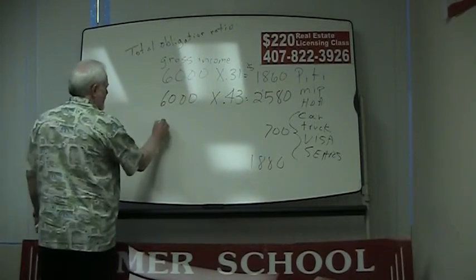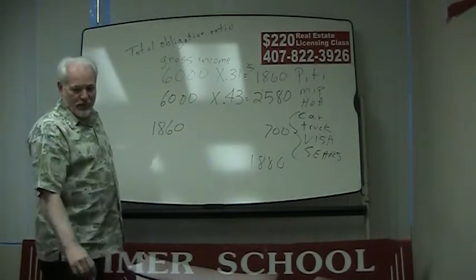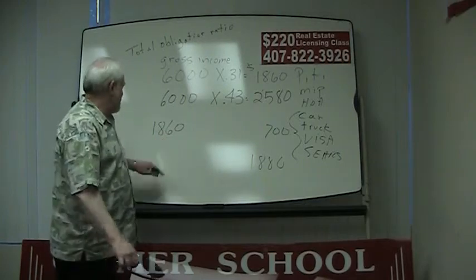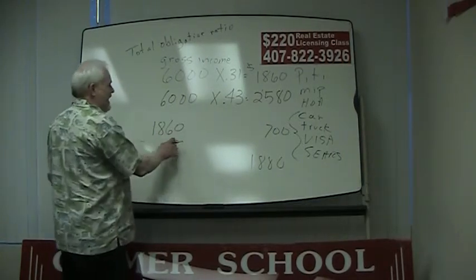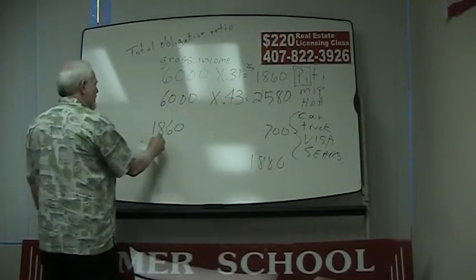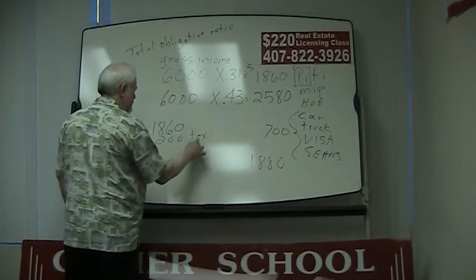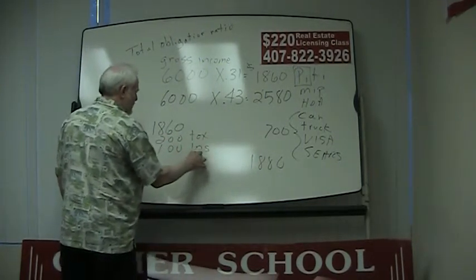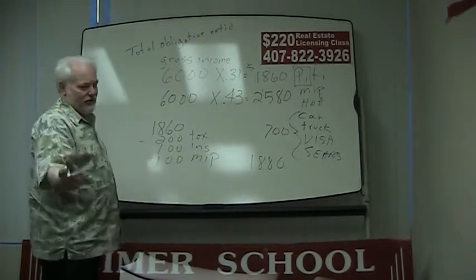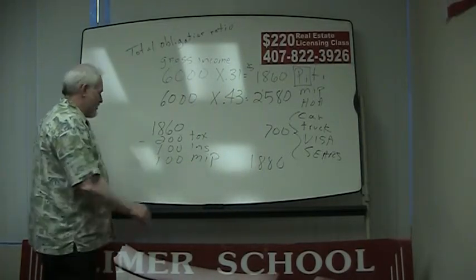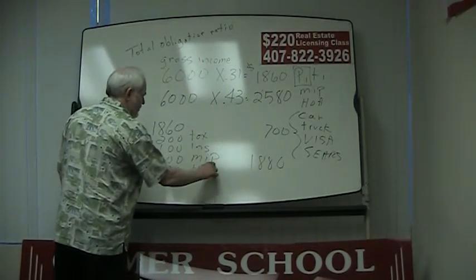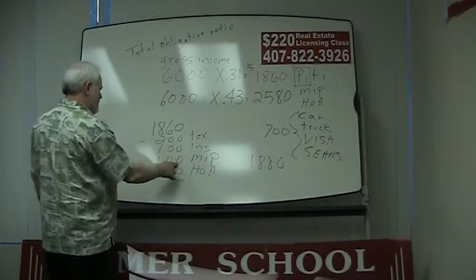If you're going to make an 1860 dollar payment, we've got to subtract from that. The only thing that we can compute is the principal and interest portion. About 200 of that is going to be your taxes, about 100 is your insurance, about another 100 is that MIP thing, and about 50 is your HOA fee.